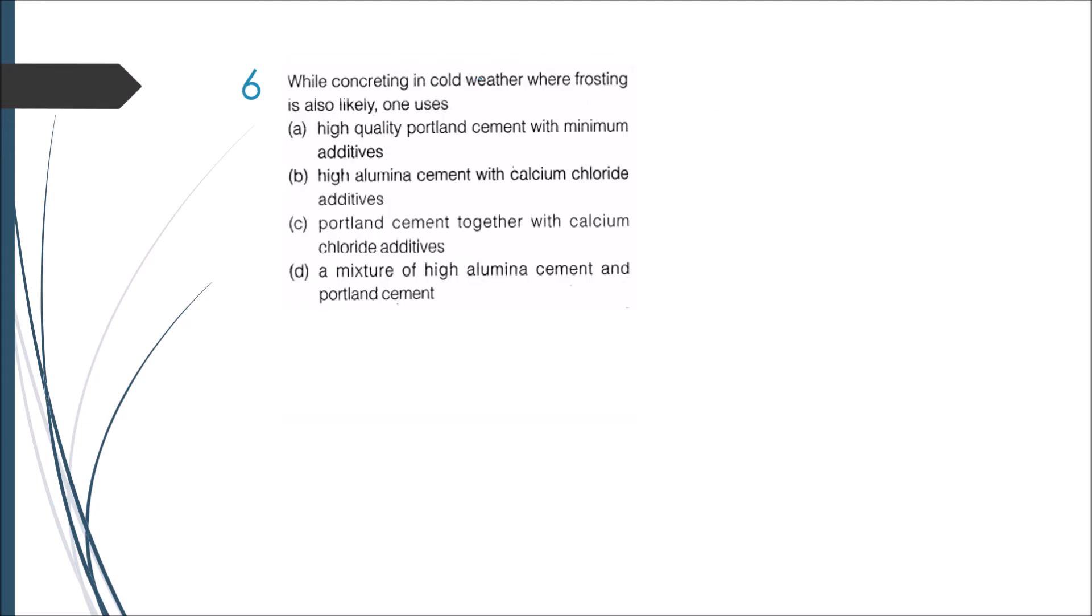Next: while concreting in cold weather, by frosting is also likely, one uses what? In cold weather we will go for accelerators. Accelerators will increase the setting action. One such example for accelerator is calcium chloride. We also have something opposite to it which is called retarders, and an example for that is also a calcium component called calcium sulfate, commonly called as gypsum. Gypsum will reduce the setting action, whereas accelerator will quicken the setting action.